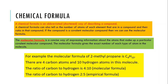To be able to represent compounds, we use something called chemical formula. A chemical formula is an abbreviated, shortened way — a short way of representing and describing a compound. A chemical formula can also tell us the number of atoms of each element, and the ratio in that compound. So you can even see the ratio between elements.